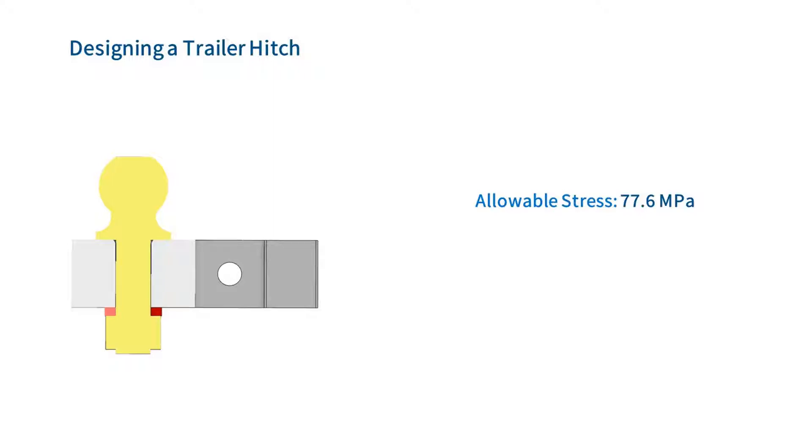For this simple case, we will assume that the trailer applies the following two loads on the ball: a vertical load due to the weight of the trailer, and a horizontal load due to us pulling on the trailer. We can apply these loads to our model in 3D experience.